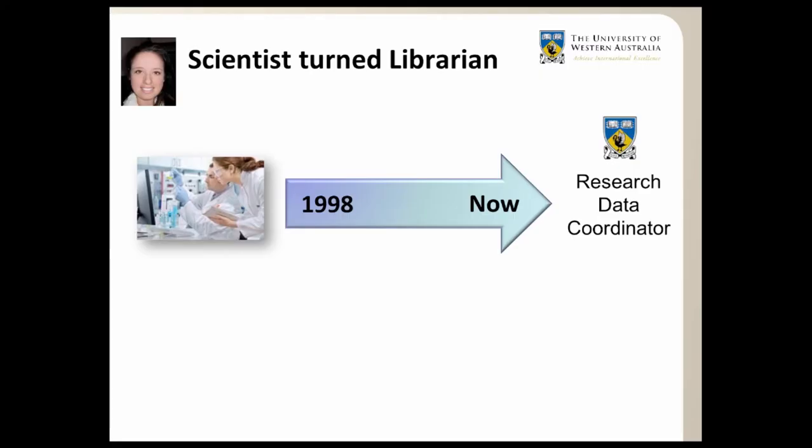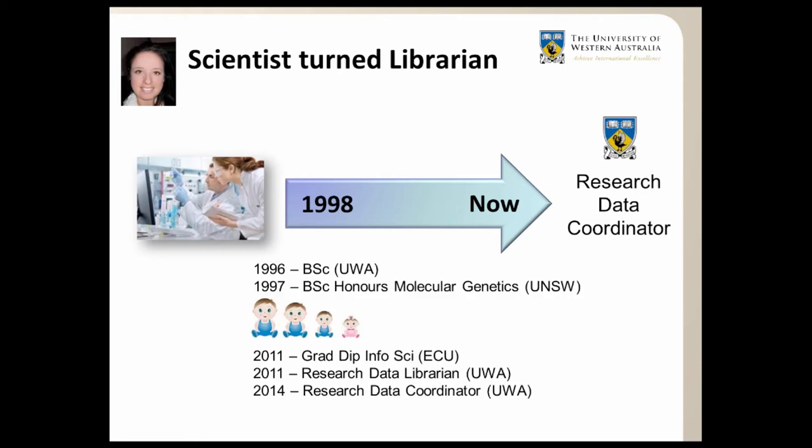I graduated from UWA and then from the University of New South Wales with a Bachelor of Science in Molecular Genetics about 17 years ago, and I worked as a research scientist in neurodegenerative disorders for several years. Then when children came along, I decided to change scope and went back to study information sciences at ECU, where I was offered a job at UWA as their first research data librarian in 2011.